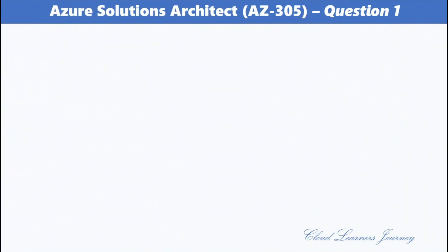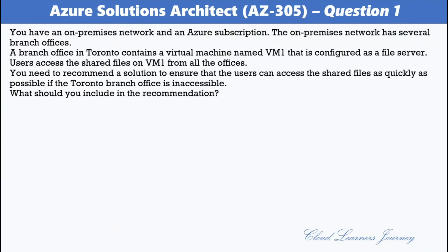Question number 1. You have an on-premises network and an Azure subscription. The on-premises network has several branch offices. A branch office in Toronto contains a virtual machine named VM-1 that is configured as a file server. Users access the shared files on VM-1 from all the offices. You need to recommend a solution to ensure that users can access the shared files as quickly as possible if the Toronto branch office is inaccessible. What should you include in the recommendation?